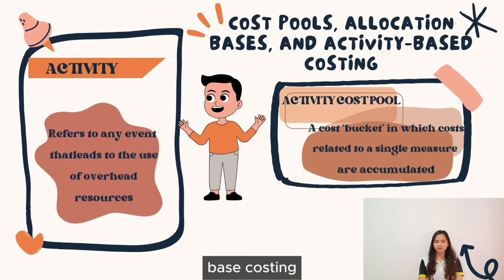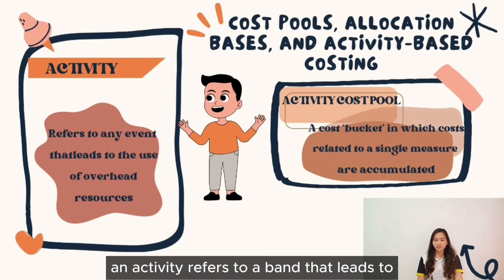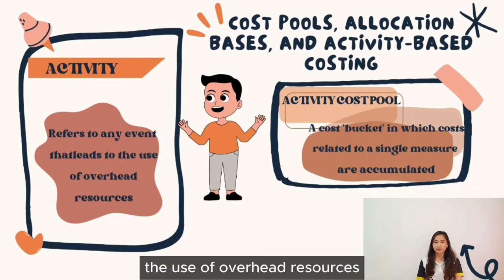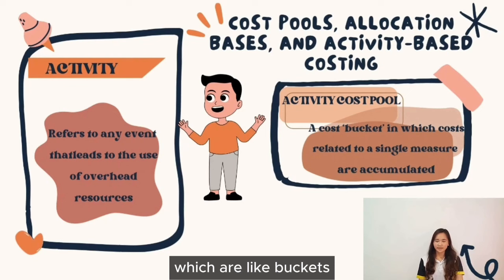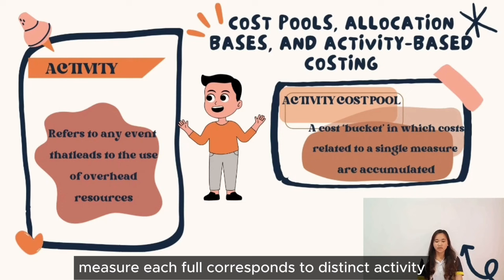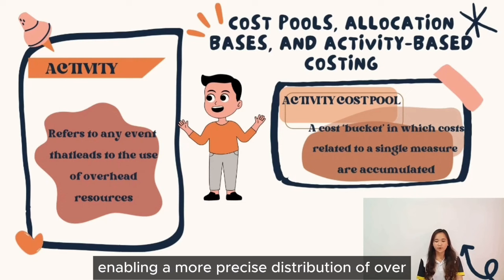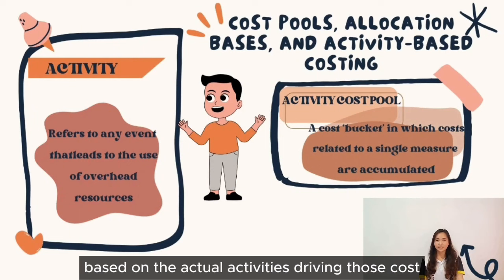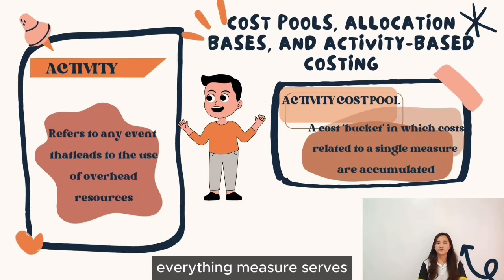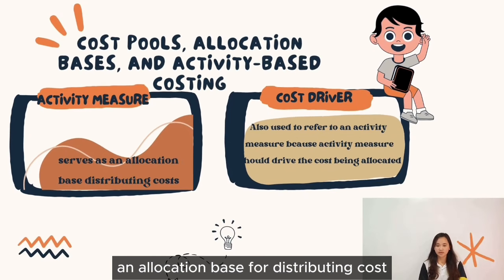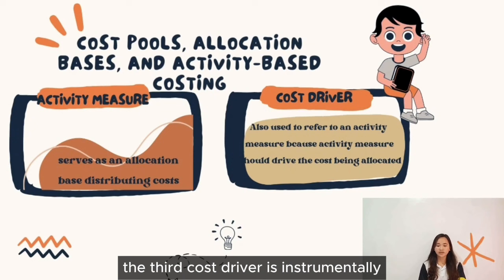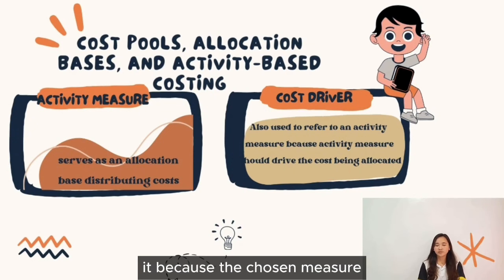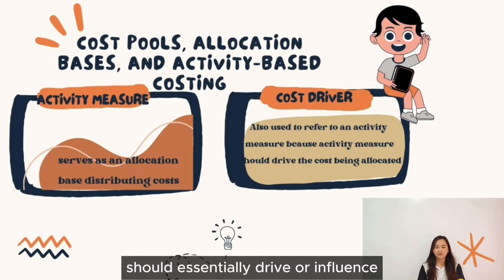Cost pools, allocation basis, and Activity-Based Costing: In ABC, an activity refers to an event that leads to the use of overhead resources. These activities can range from manufacturing processes to administrative tasks. To track and allocate costs, ABC uses cost pools, which are like buckets collecting costs associated with a specific activity measure. Each pool corresponds to a distinct activity, enabling a more precise distribution of overhead expenses based on the actual activities driving those costs.